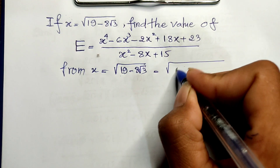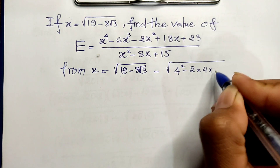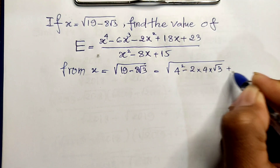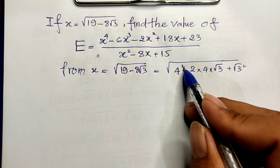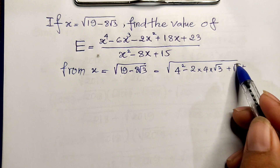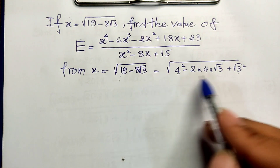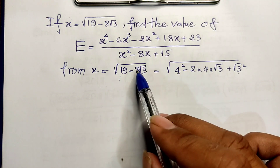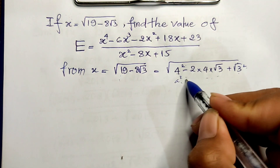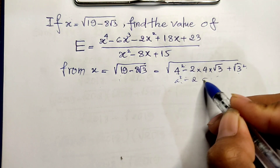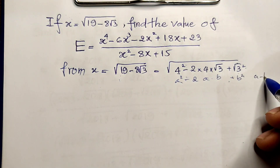I can rewrite 19 minus 8√3 as: 4 squared minus 2 times 4 times √3 plus (√3) squared. We see that 4 squared equals 16, and (√3) squared equals 3, so 3 plus 16 equals 19. And 2 times 4 equals 8. So this matches the rule a² minus 2ab plus b² equals (a minus b)².